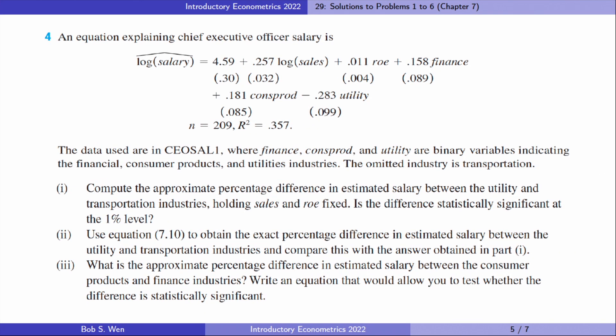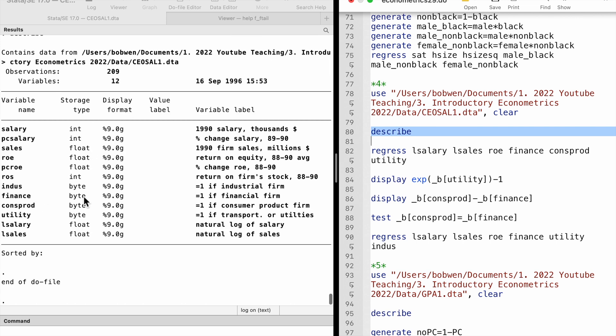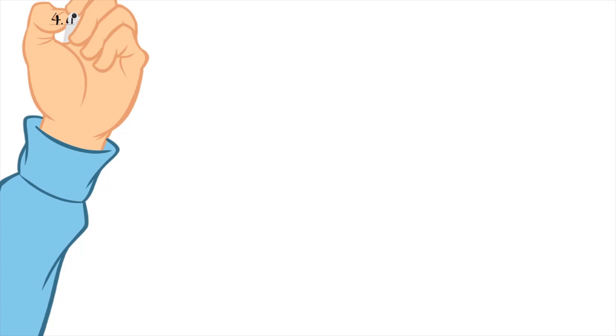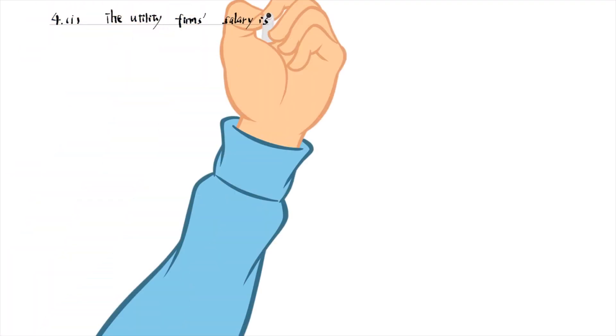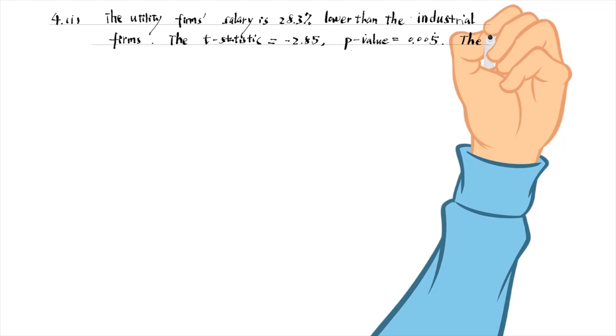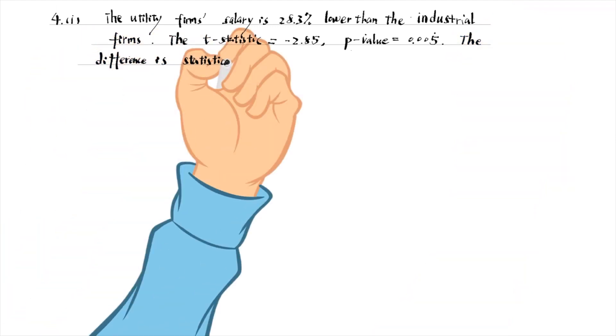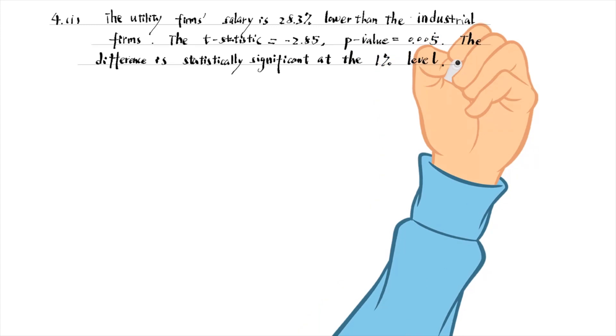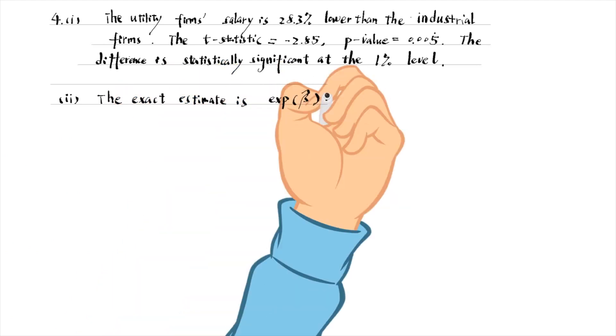Let's go to problem number four. We can use the describe command to find the four groups of firms in the model. There are industrial firms, financial firms, consumer product firms, and transportation or utility firms. Since the base group is the industrial firms, the estimate for utility is the approximate percentage difference between these two types of firms. The utility firm's salary is 28.3 percent lower than the industrial firms. The t-statistic is minus 2.85 and the p-value is 0.005. The difference is statistically significant at the 1 percent level. The exact percentage difference is 24.6 percent. It becomes smaller in magnitude.